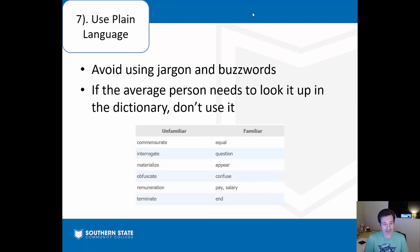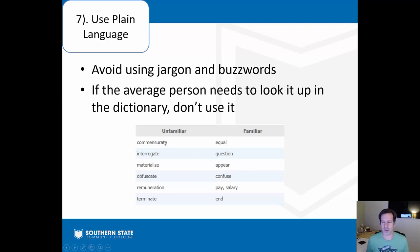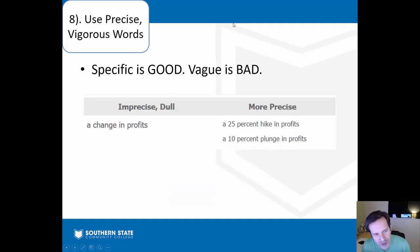Number seven: use plain language — avoid jargon and buzzwords. People love to say things like 'change the paradigm' to sound plugged in. But if the average person has to look it up, it's probably not a good word for everyday communication. Instead of 'a salary commensurate with experience,' say 'a salary equal to experience.' Stay away from fancy words and aim for a conversational tone.